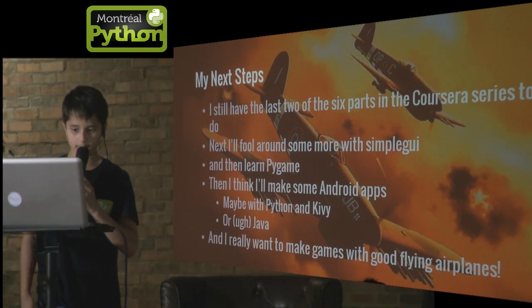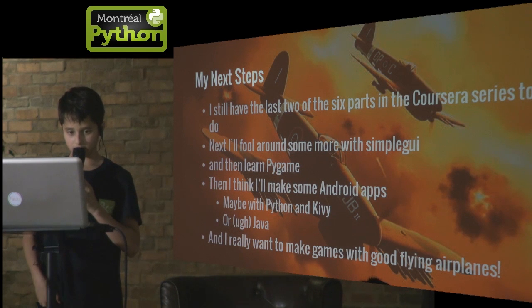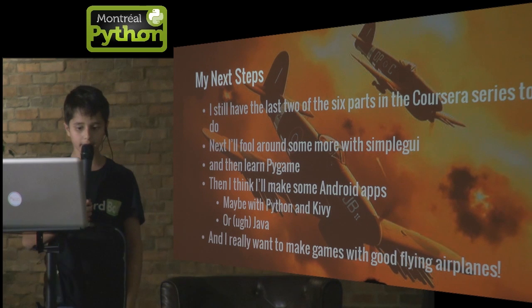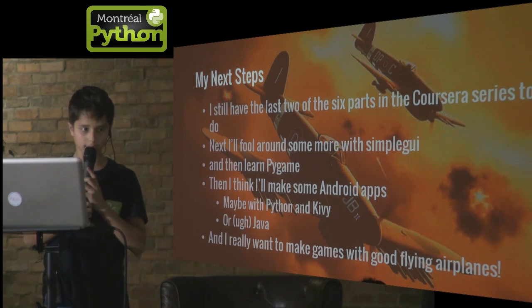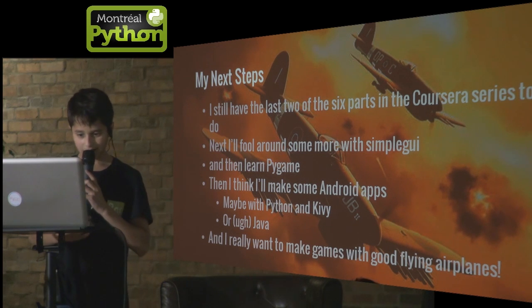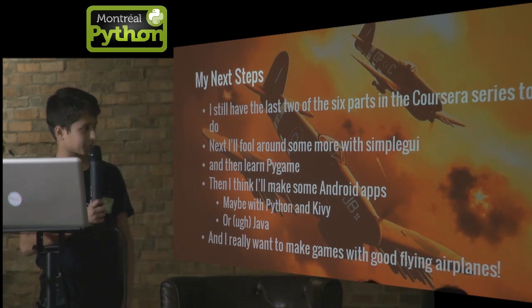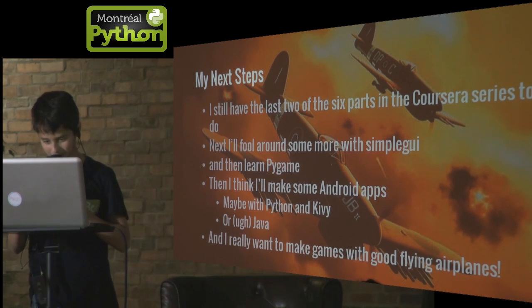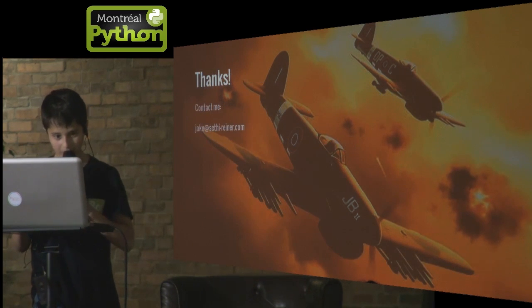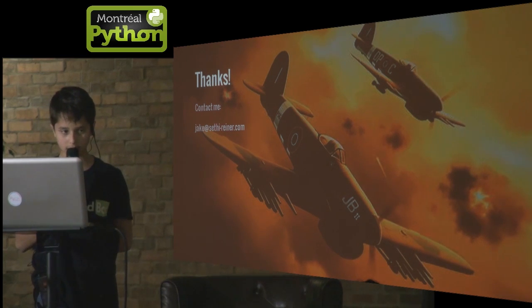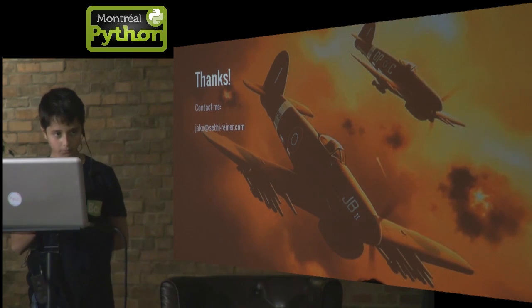In terms of my next steps, I still have the last two of the six parts in the Coursera series to do. Next I'll play around some more simply with the Raspberry Pi game. And I think I'll make some Android apps, maybe with Python and Kivy, or as a last resort Java. I really want to make games with good flying airplanes — I've been at this for five years and I still haven't. Thanks for listening to my presentation. If anyone has any questions, I'll be happy to answer them.